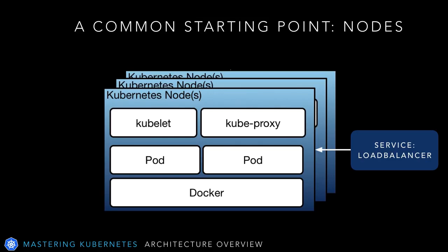In traditional architectures, the server or VM was usually the center of the universe. In Kubernetes, they're still quite important — they're called nodes. They used to be called minions, so you may see that in some older documentation, but now we refer to them as nodes. A node is a worker machine in Kubernetes. A node can be a VM or even a physical machine. Each node, regardless of what it is, has the services necessary to run pods and is managed by the master components.